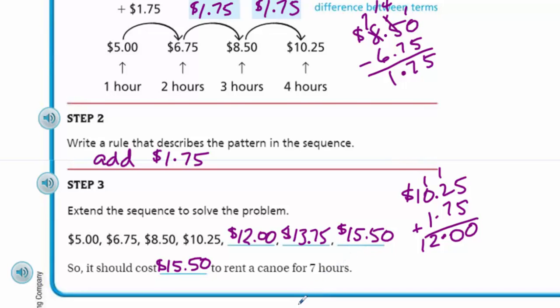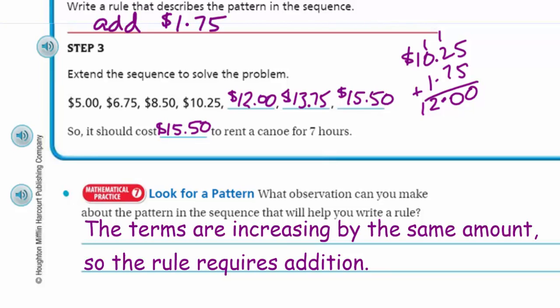So the observation that we can make about the pattern and the sequence that will help us write the rule. Well, I think looking at the terms. Okay. Remember, those are the numbers. If the terms are increasing by the same amount, then that rule would have to require addition. And that's what kind of helped us write the rule. So by just looking at the terms, we could say that the $5, $6.75, it was increasing. So we knew we were going to add something.